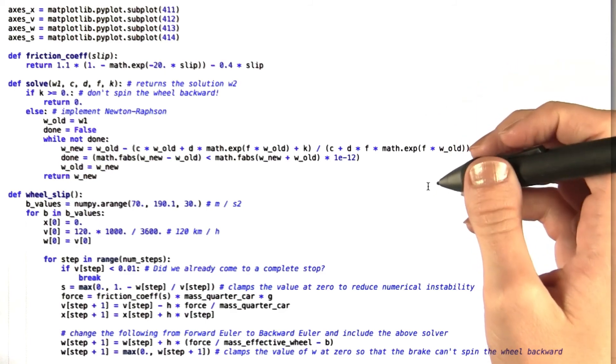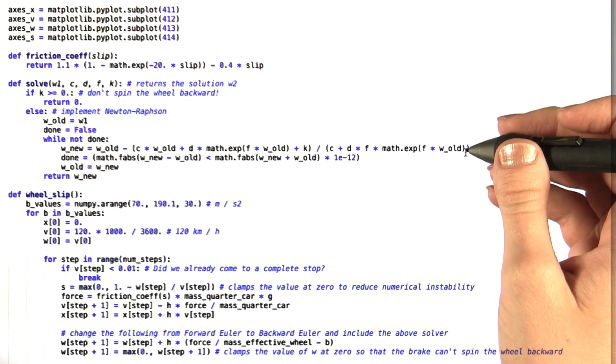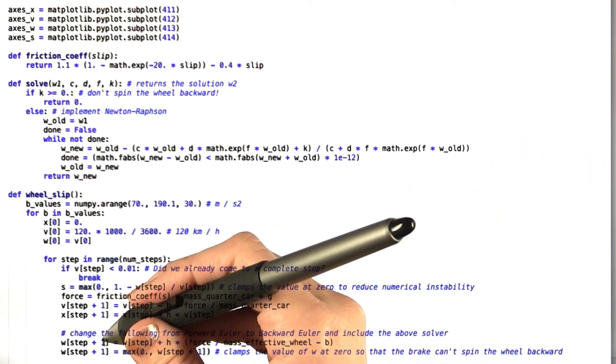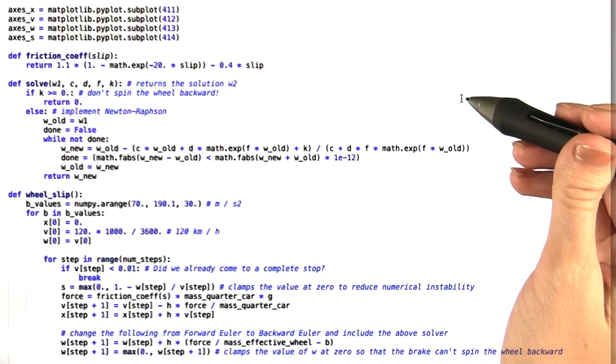Once you've used the backward Euler method to come up with values for C, D, F, and K, we want you to use this solver in conjunction with the backward Euler method to come up with an expression for W at step plus 1. In the solution video, I'll give you a more in-depth explanation of what this solver is doing and how it works.